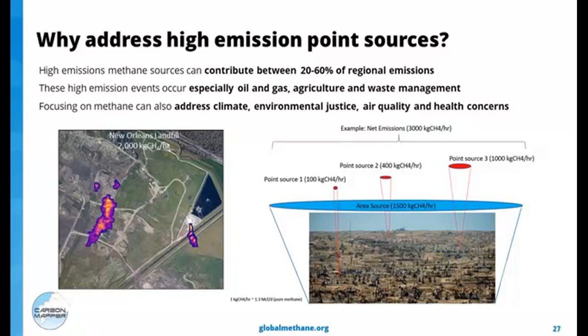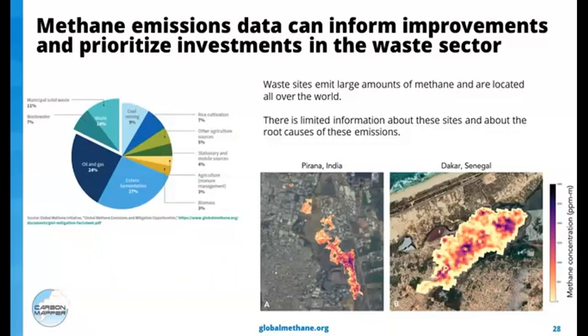High emission sources are seen across major sectors: oil and gas, agriculture, coal, and waste. Addressing methane in these sources leads to significant community benefits in terms of air quality and public health. Getting more data about these sources, and especially bringing more visibility to the waste sector, can help support major emissions reductions through the great initiatives that are ramping up. One of the biggest challenges around waste methane is limited information globally about where the emissions are and getting more information on their root causes.